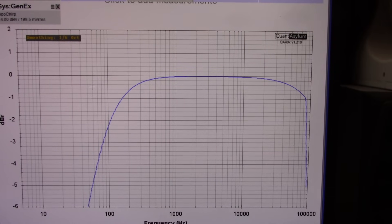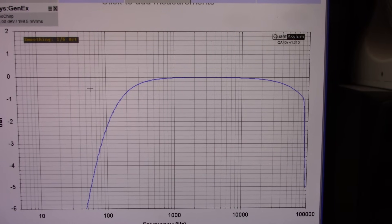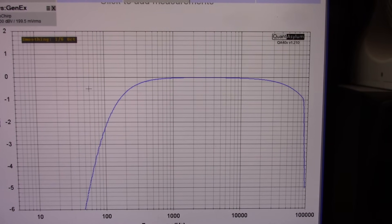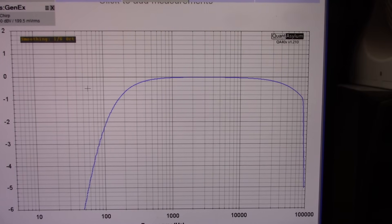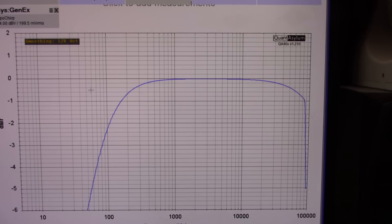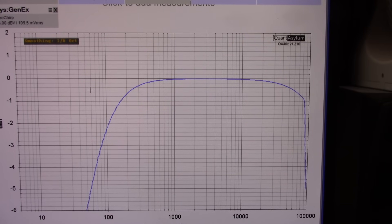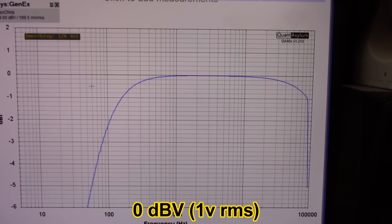Okay, so now I added the 10k load resistor to the output of the preamp. Making the total impedance around 9.1 if you include the input impedance of the analyzer. And I also set the signal so that the output's still at 0 dB, just to make sure things are even.